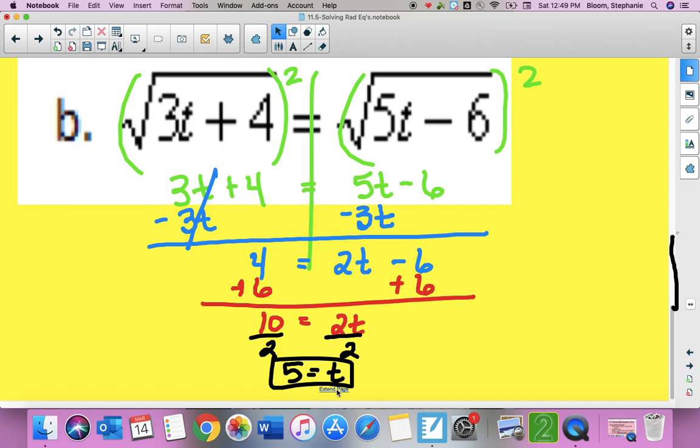So t is equal to 5. And I'm just going to make sure that that works. If I plugged in 5 right here, 3 times 5 is 15 plus 4 would be 19. If I plugged in 5 right here, 5 times 5 is 25 minus 6 would also be 19. And so it does check.